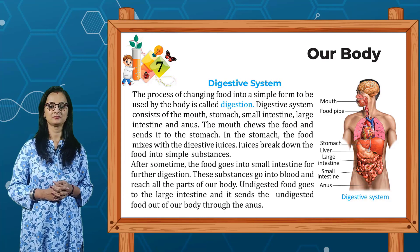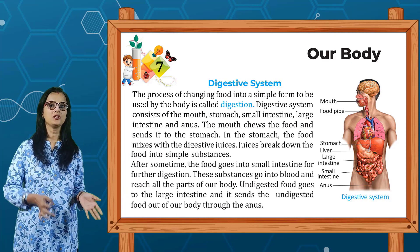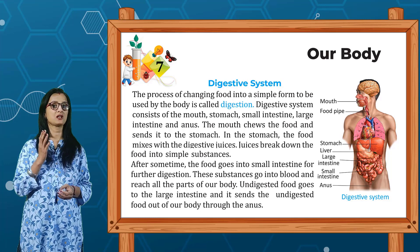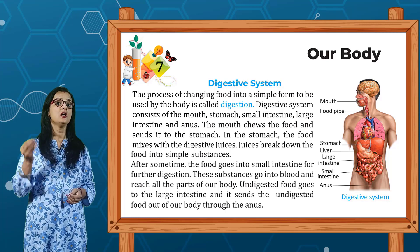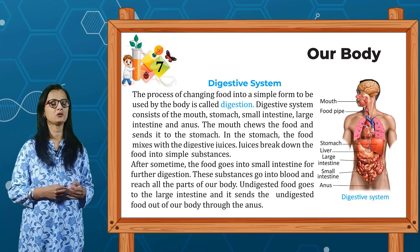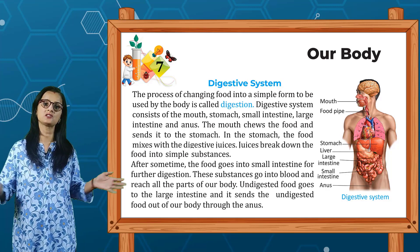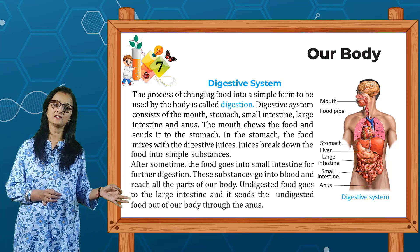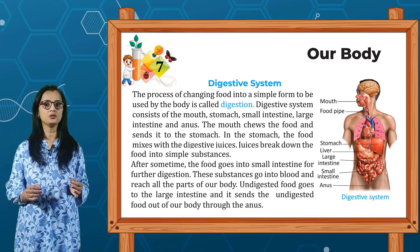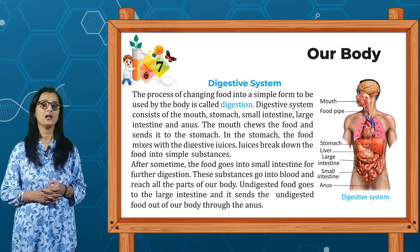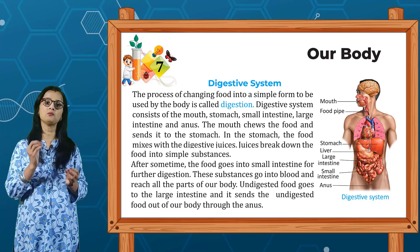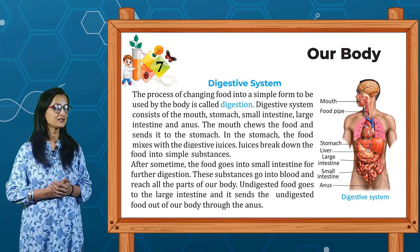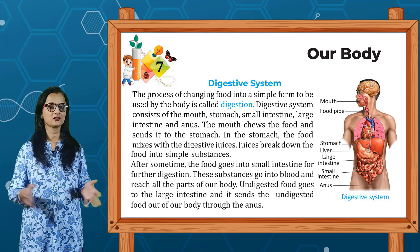Next is our digestive system. The process of changing food into a simple form to be used by the body is called digestion. The digestive system consists of a mouth, stomach, small intestine, large intestine and anus — as you can see in this picture showing all these parts together forming the digestive system.